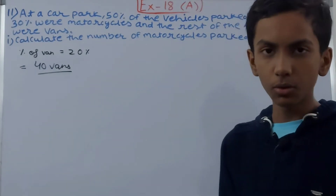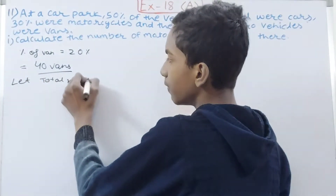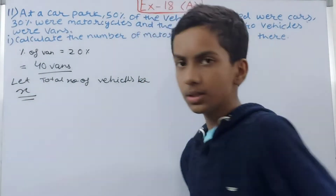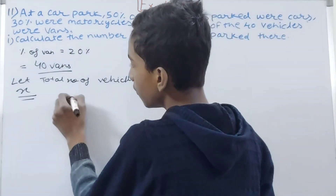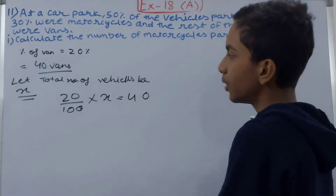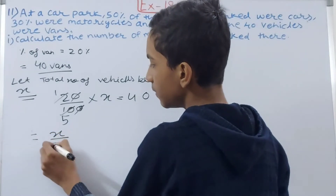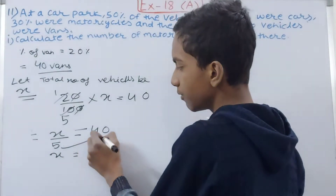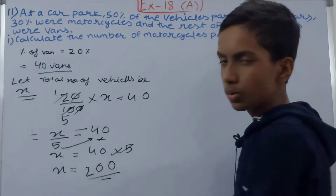Let the total number of vehicles be x. We know that 20% of x equals 40, so we frame it as 20/100 × x = 40. Simplifying: x/5 = 40, therefore x = 40 × 5, which gives us x = 200.